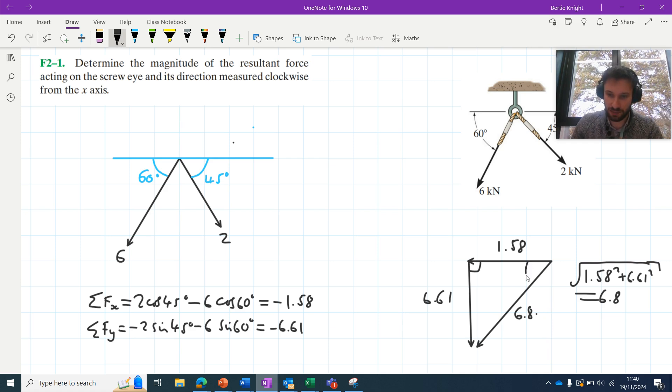The question also asks its direction measured clockwise from the x-axis. It might be helpful then to determine this angle here. Let's call it theta for now. We can use, now that we have all three sides of the right angle triangle, we can use any trigonometric ratio we like. We can use sine, cosine, or tan. I'm going to use tan here. We can say that the tan of theta here is equal to the opposite over the adjacent. The side opposite the angle here is 6.61, the side adjacent to the angle that isn't the hypotenuse is 1.58. We can take the inverse tan of both sides. We can say that theta is equal to the inverse tan of 6.61 all over 1.58, and when we bring that in our calculator we find that theta in this case is equal to 76.6.